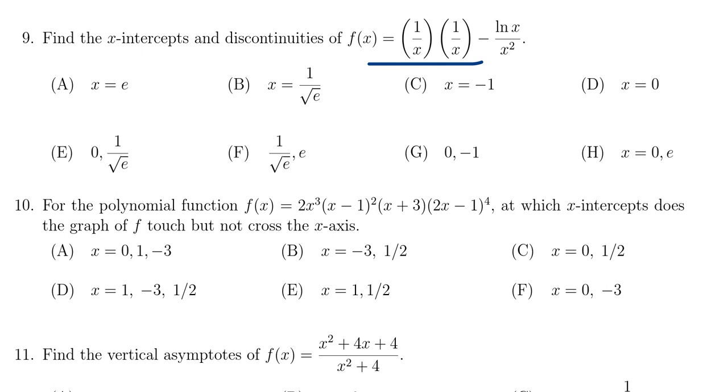The x-intercepts are what's going to make the rational expression go to 0, the numerator go to 0, I should say, because a rational expression will go to 0 when its numerator is 0. And then the discontinuities are going to come from perhaps things that make the denominator go to 0. You also have a natural log in there, so there's some things to watch out for.